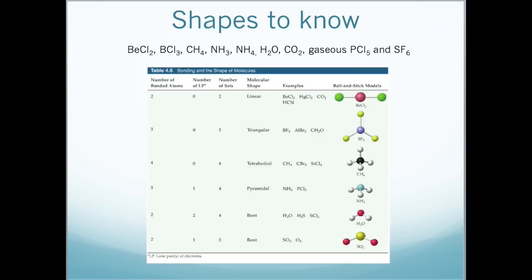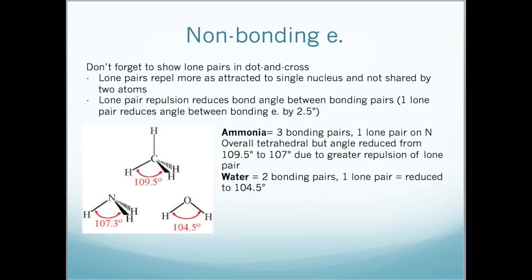These are the molecules that we need to know about: beryllium chloride, methane, ammonia, water, carbon dioxide and so on. We have the number of bonded atoms, the molecular shape, the example and what the shape would look like in 3D. So for example, for beryllium chloride, carbon dioxide, and carbon disulfide, the shape will be linear because we only have two bonded atoms. For water we will have a bent shape as shown here, and for ozone and sulfur dioxide it will also be bent. Don't forget to show the non-bonding pairs, so the lone pairs of electrons, in the dot and cross diagrams.